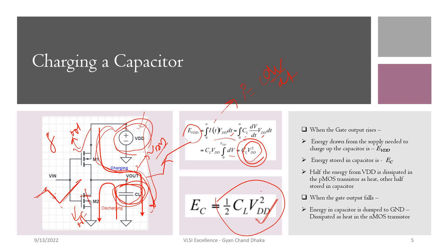That means the other (1/2)·CL·VDD² of energy got dissipated across the PMOS transistor and the internal resistance of the load capacitor. This is a very important point: the total energy supplied by the VDD source is CL·VDD², half of that energy is stored in the capacitor, and the other half is dissipated across the PMOS resistance and the internal resistance of CL.